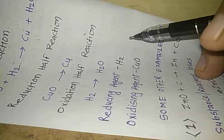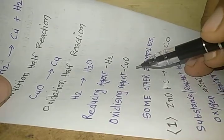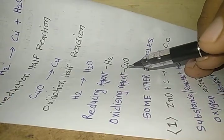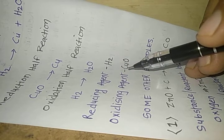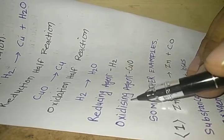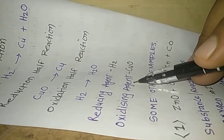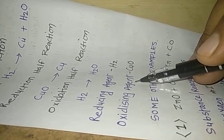Remember, in a redox reaction we have four things: the substance reduced, the substance oxidized, the reducing agent, and the oxidizing agent. This is how we can understand the redox reaction.